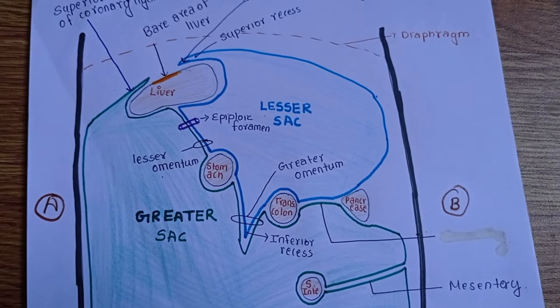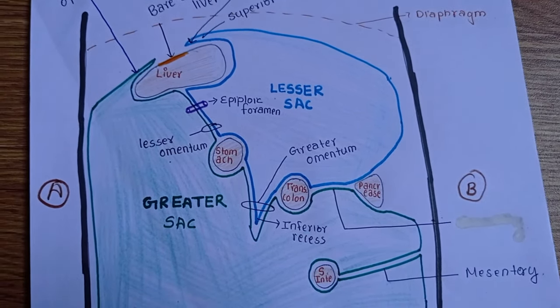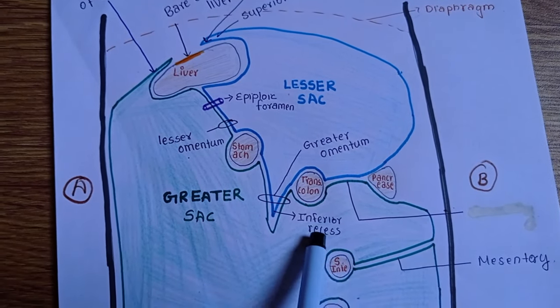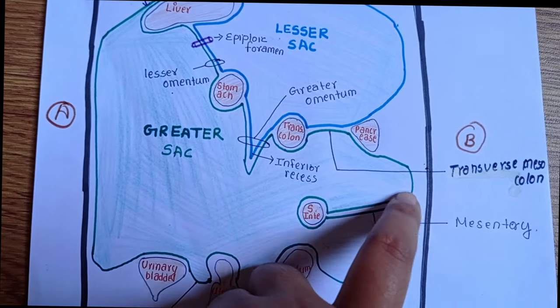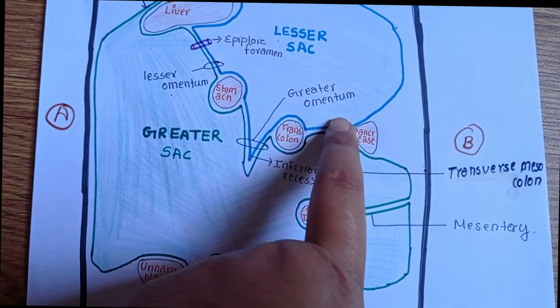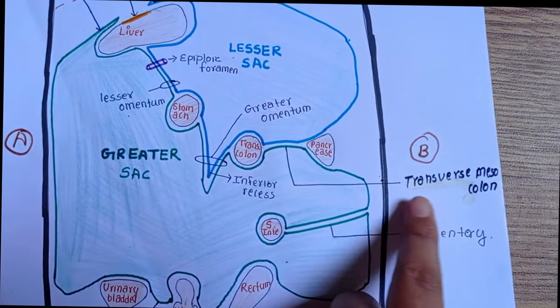Then we have this folding giving to the intestine; we call this mesentery. Then this one here, the folding of the transverse colon, we call transverse mesocolon.